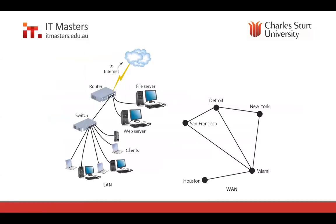Here's an example: on the left we have a LAN topology with a router connecting to the internet, file and web servers, and a switch connecting to clients — basically a star topology. On the right, we have a basic schematic of a WAN diagram with geographical locations: Miami, New York, Detroit, San Francisco, and Houston all connected. This is interesting in that it's partially a star with all sides connecting off Miami as the head office, but also has interconnecting links between San Francisco, Detroit, and New York as redundant links — making it a partial mesh topology.